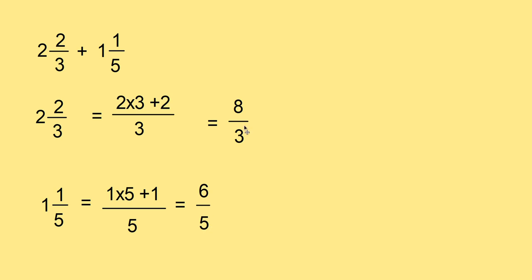Now you can add 8 by 3 and 6 by 5. Here, LCM is equal to 15. Therefore, that is 8 into 5. So 15, 3 fives are 15. So 8 into 5. 5 threes are 15. So 6 into 3 divided by 15.